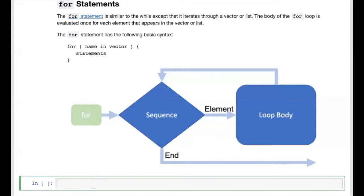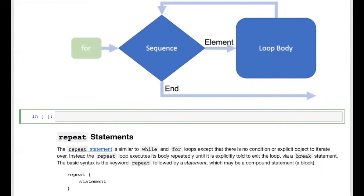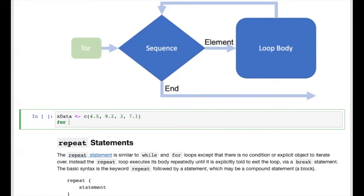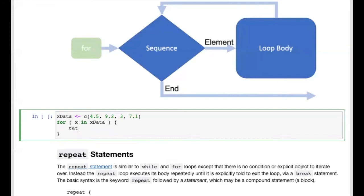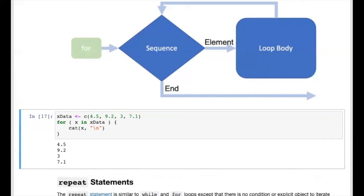As an example, given a vector of floating point values we simply want to output them one per line. We create a variable xdata and assign our vector to it. Then we write the for keyword, create a variable x for the current element, use the in keyword followed by xdata. This syntax assigns each element of xdata to x in order for every iteration. In the loop body, we use cat to write x followed by a newline, and running the code prints all values one per line in their original order.